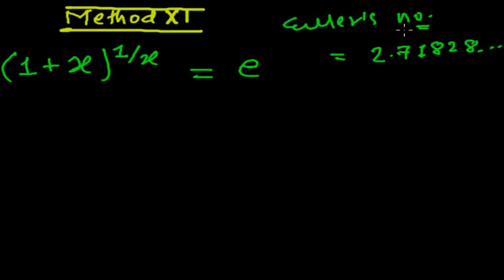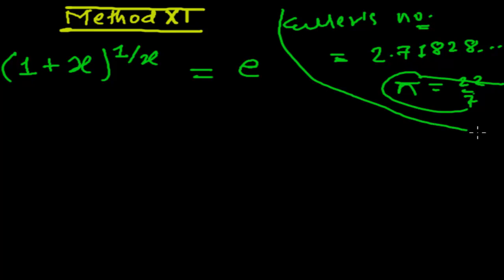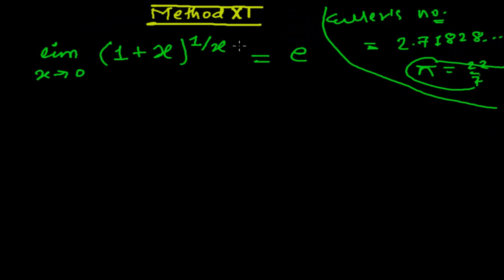Its value is about 2.71828. It is Euler's number — a constant, just like pi (which is 22/7). It is a constant in mathematics, and that is all we need to know here.